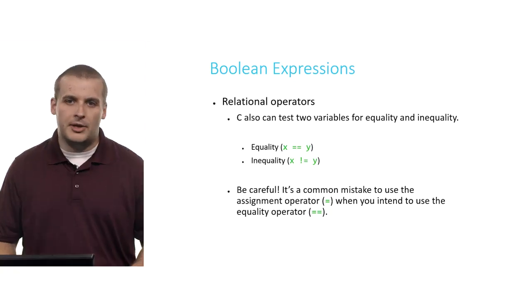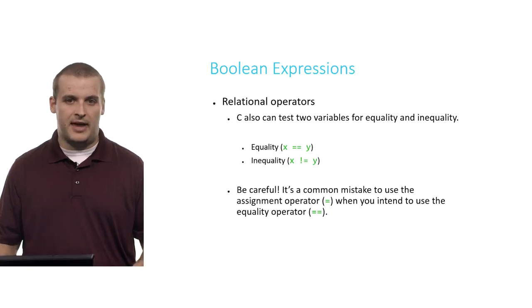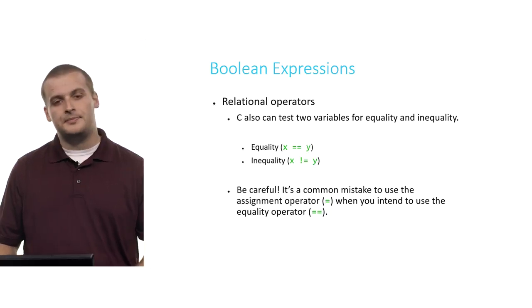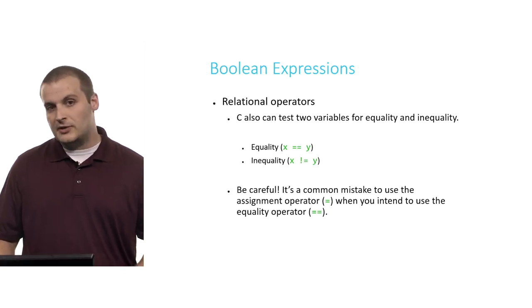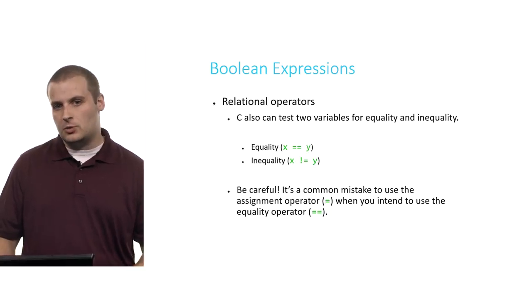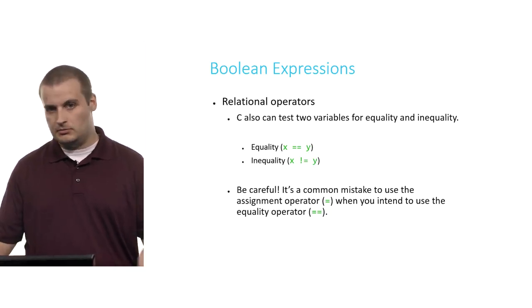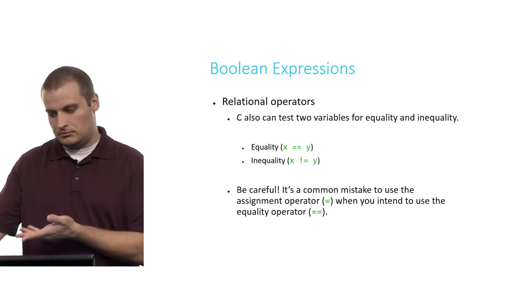The final two relational operators that are important are testing for equality and inequality. x equals equals y is true if x and y's value is the same. If x is 10 and y is 10, then x equals equals y is true. If x is 10 and y is 11, x equals equals y is not true. We can also test for inequality using exclamation point or bang or not. If x is not equal to y, if that's the test we're using here, we'll be good to go. If x is not equal to y, we'll go down that path.